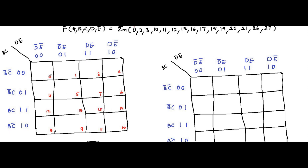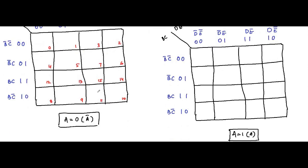Always be careful while numbering the minterm cells: 0, 1, 2, 3, 4, 5, 6, 7, then at the bottom 8, 9, 10, 11, 12, 13, 14, 15. One mistake in cell numbering and the whole solution will be wrong.